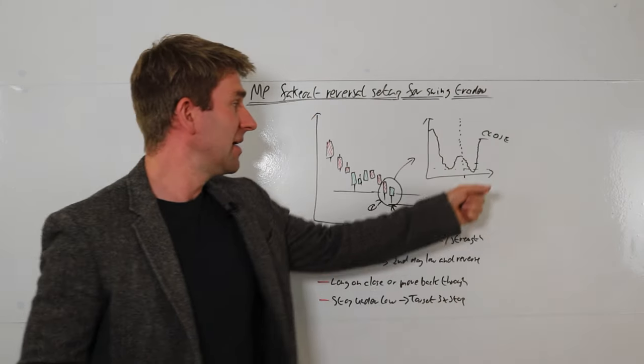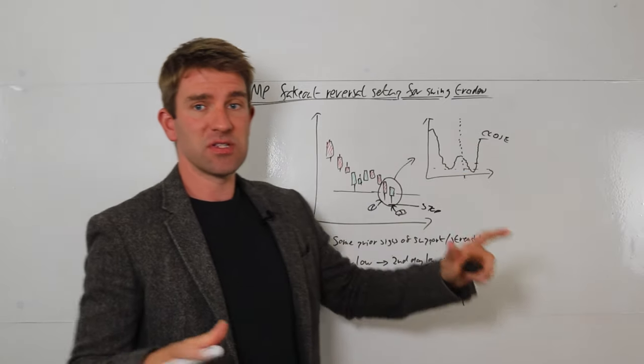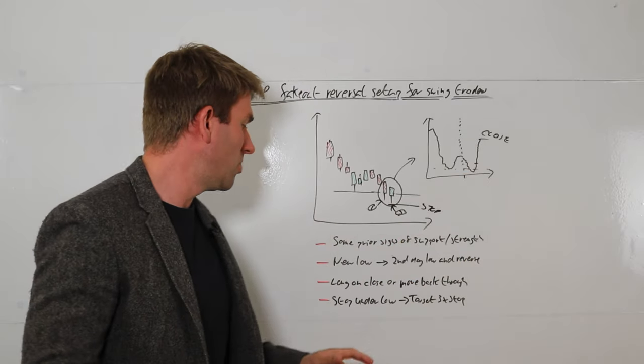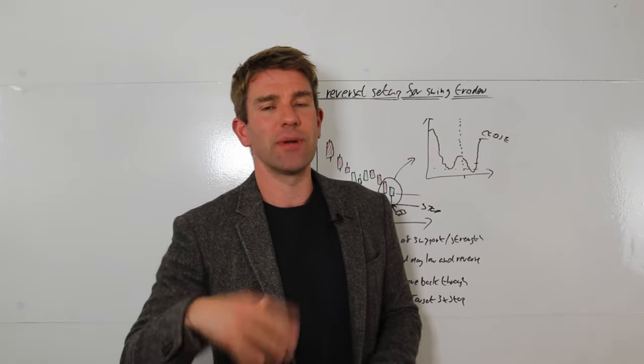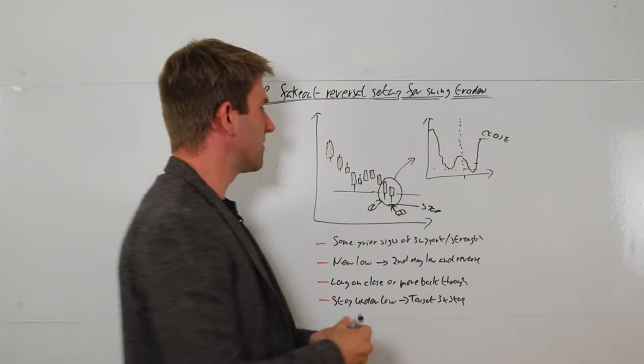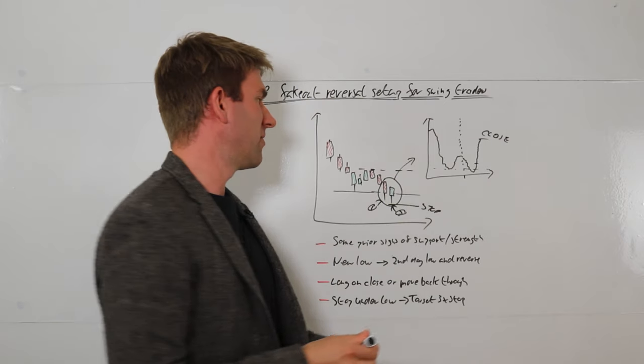And it would be the most recent low. Doesn't matter, that could have gone way lower than reverse, it doesn't matter. You're still going to have it under that low. And your targets is going to be at least three times your stop. Now if you've got a very obvious place for it, like for example you know got a decent level of resistance there, then maybe you're going to look to take targets there if it fits in with the parameters.